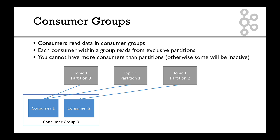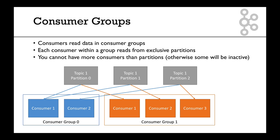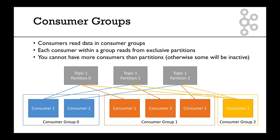If we take a consumer group with three consumers, each consumer reads from one partition, as you can see with the arrows. And if we take a consumer group composed of only one consumer, that one consumer will read from all the partitions — shown here in yellow. So remember that graph: consumers share partitions. And notice the orange one — if we add a fourth consumer, it won't be able to read anything because all partitions are already assigned to consumers.